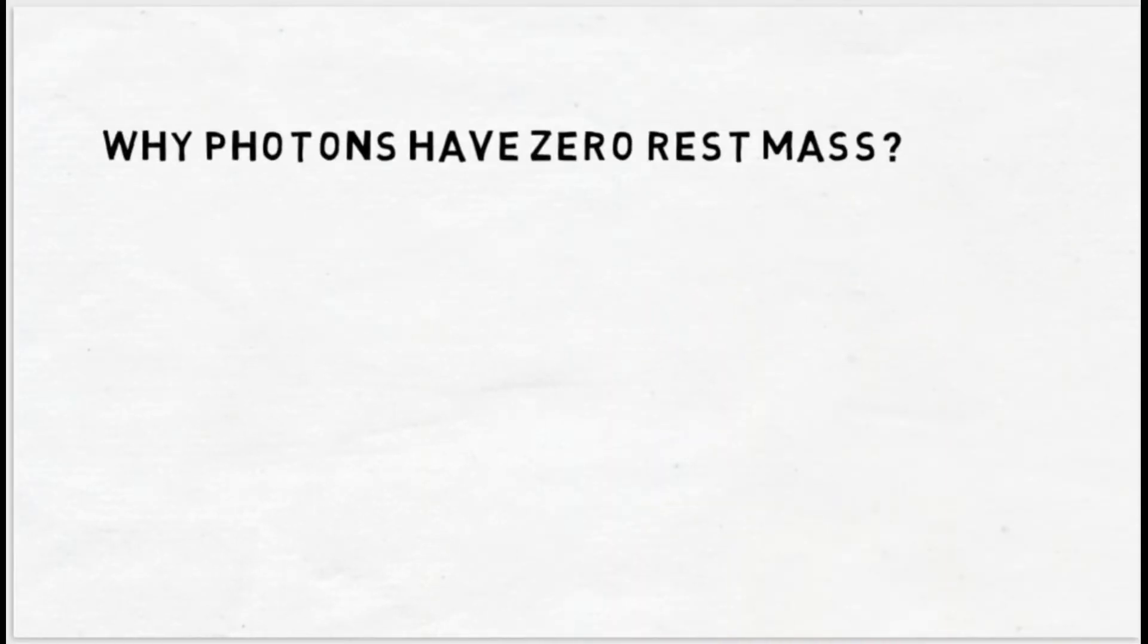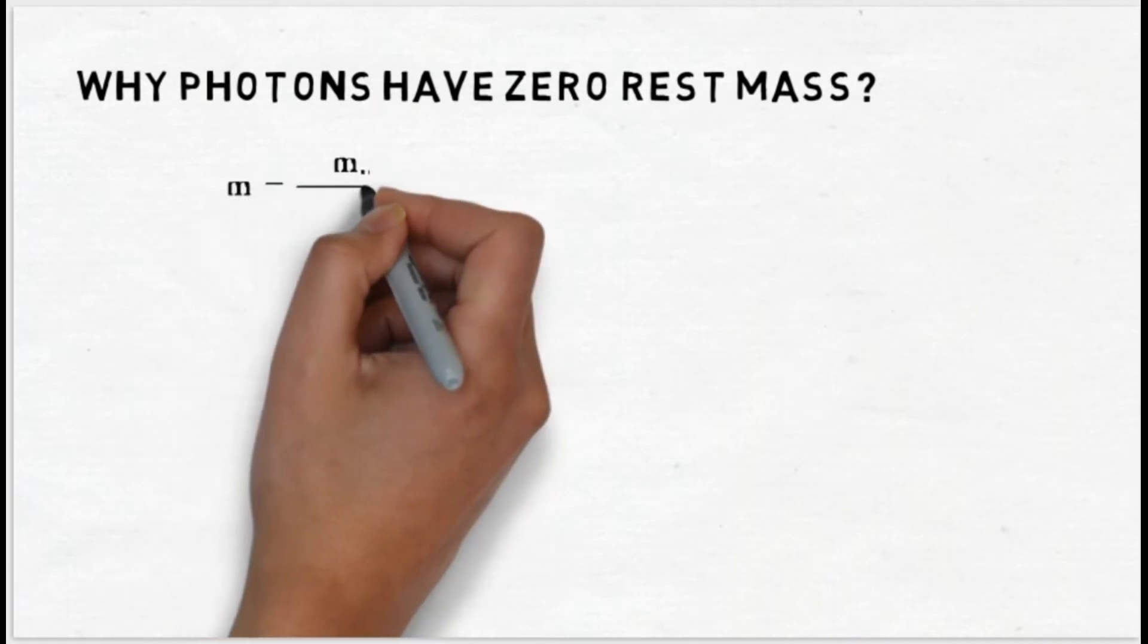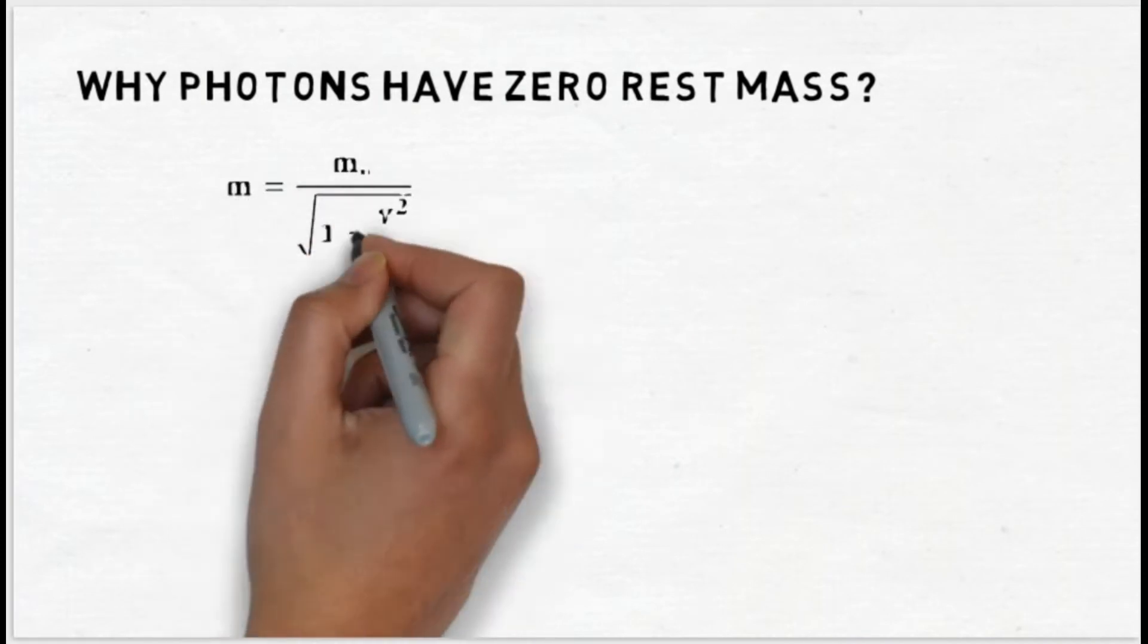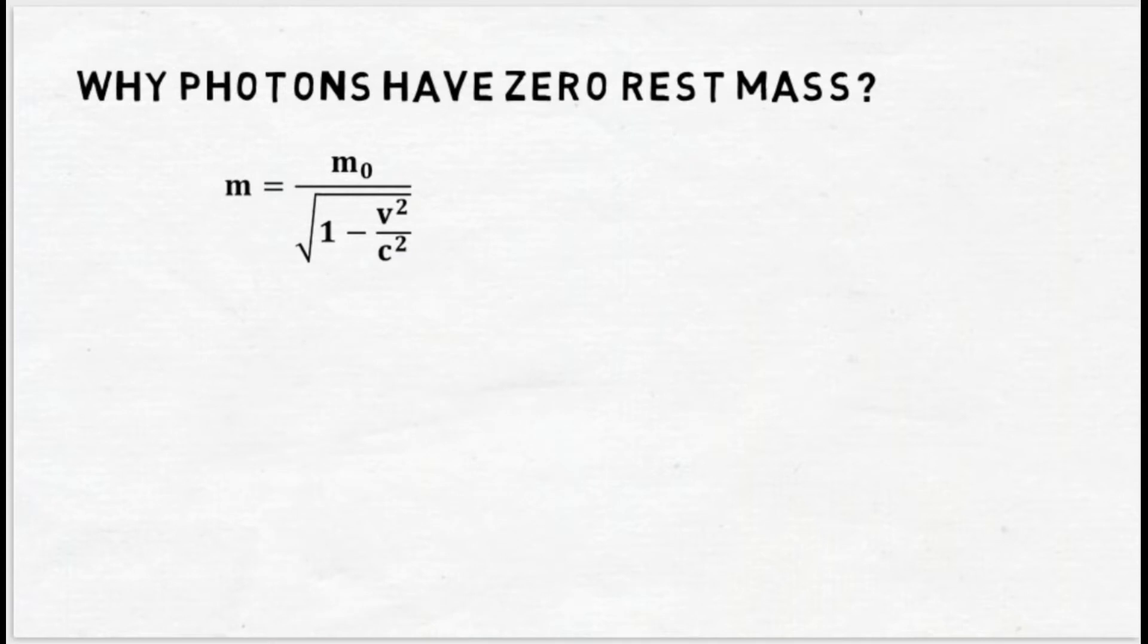According to special theory of relativity, the relativistic mass is given by this equation and is equal to the rest mass divided by under root 1 minus v squared divided by c squared.